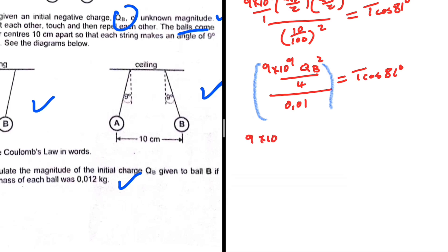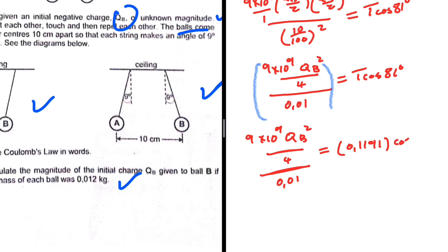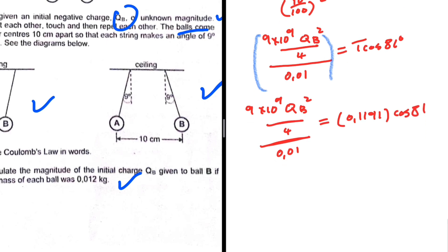Now substituting back: 9×10⁹ · qb² divided by 4, all divided by 0.01, equals T·cos(81°). The right-hand side is 0.1191 × cos(81°) = 0.0186.